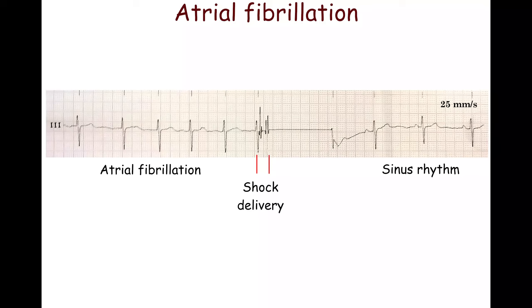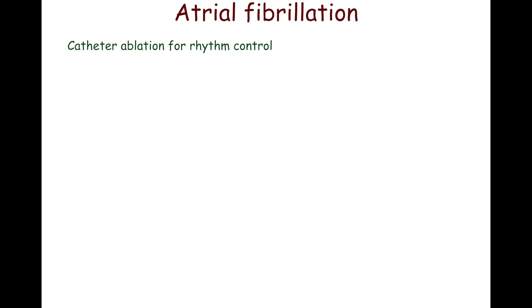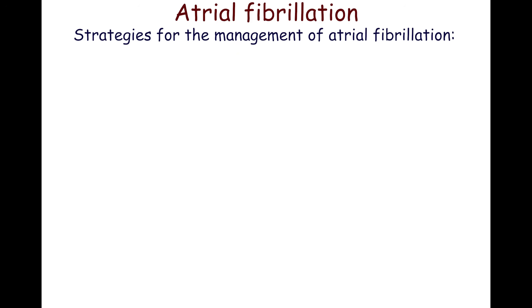Hemodynamic compromise requires urgent electrical cardioversion. Catheter ablation should be considered to maintain a rhythm control strategy. There are two strategies for the management of atrial fibrillation: rhythm control and rate control.